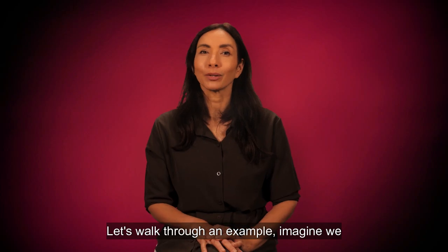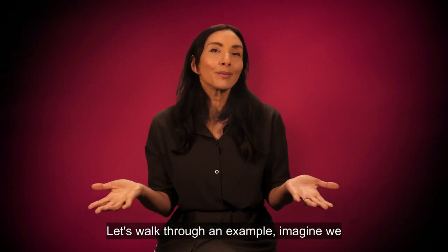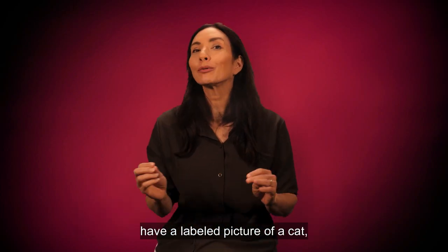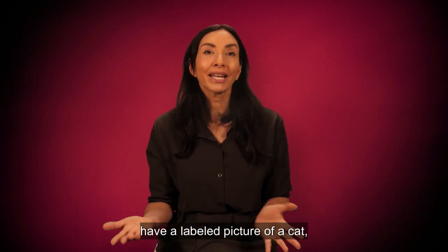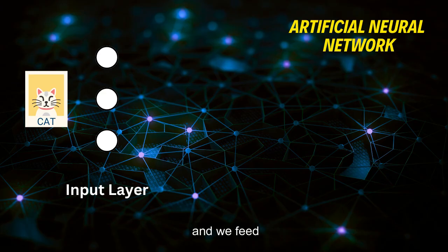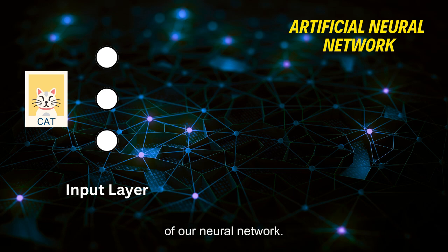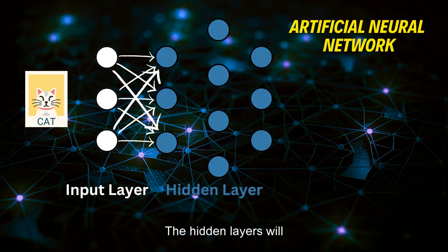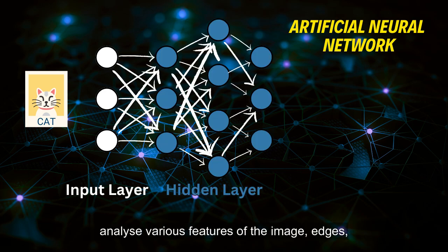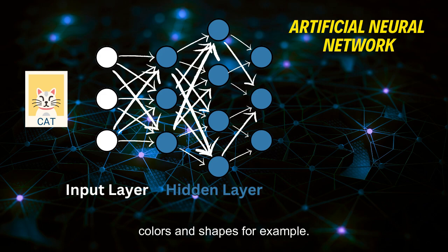Let's walk through an example. Imagine we have a labeled picture of a cat, and we feed this image into the input layer of our neural network. The hidden layers will analyze various features of the image — edges, colors, and shapes, for example.